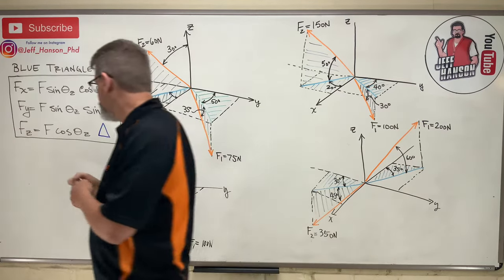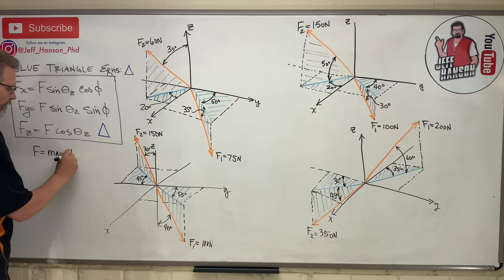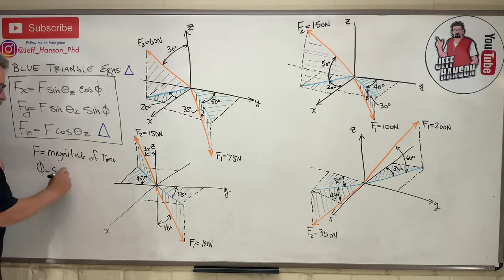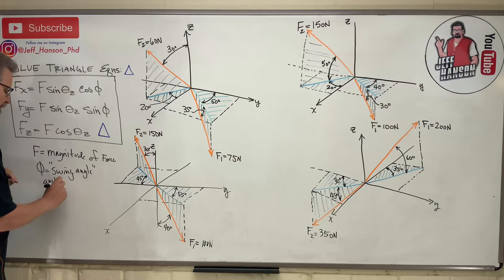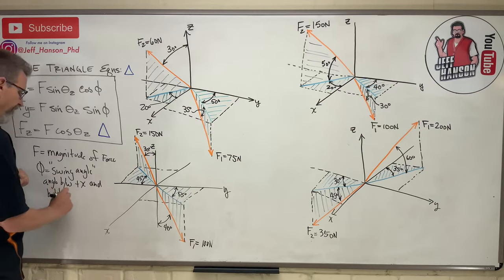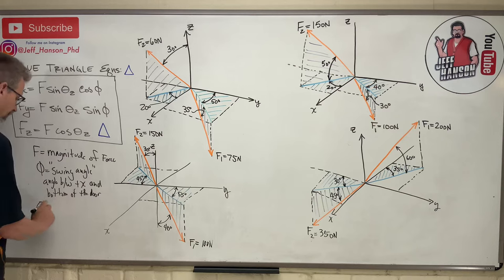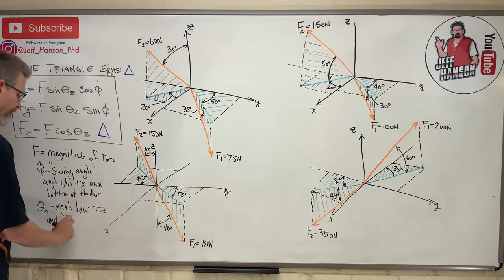Let me write it down again. F is just the magnitude of the force. Phi — remember, that was the swing angle, the angle between positive x and the bottom of the door. And then finally, theta_z was the angle between positive z and vector f.